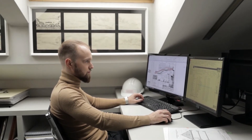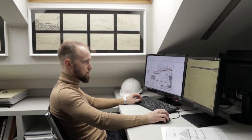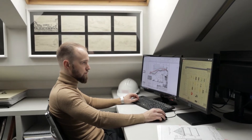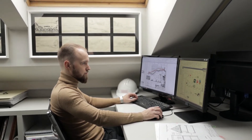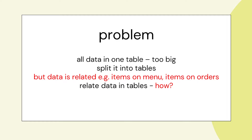In a small business, we might put our details in something like Excel — a spreadsheet — but the table is going to get too big. So we need to split the data into tables. The data is related: we've got items that are on the menu and items that are on orders, so we need to relate these tables. We can do that in a relational database.